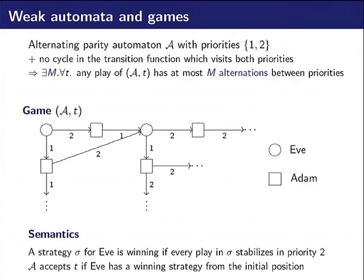I will define what is a weak alternating automata. It's an automaton which is defined via a game. It has priorities one and two, and we forbid any cycle in the transition function with both priorities. So it means that there is a bound on the number of times we can switch between one and two in a play of the automaton.